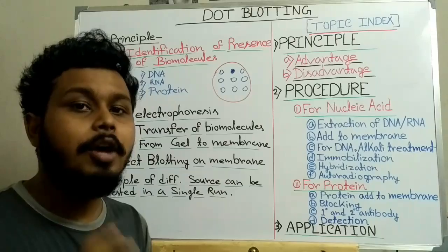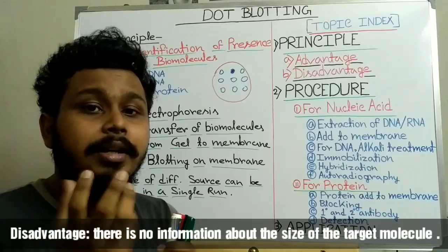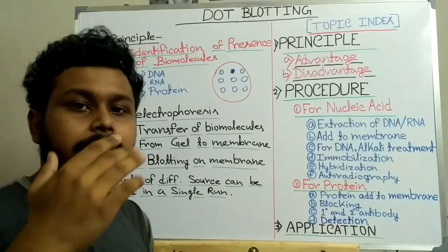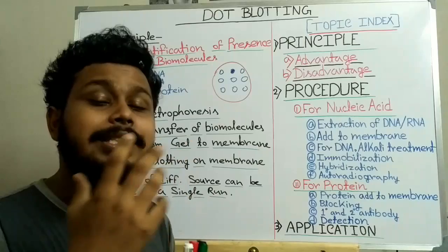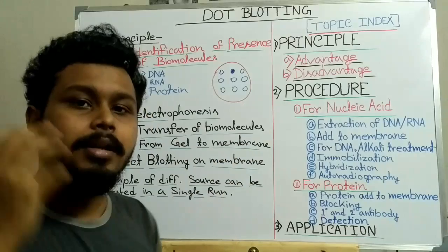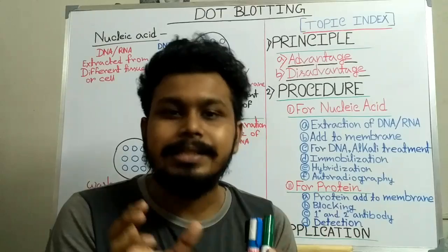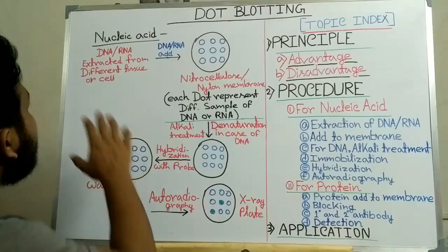The main disadvantage of dot blotting is that we do not get any information about the size or molecular weight of the biomolecules. Since we omit the electrophoresis step, the biomolecules or proteins are not separated by their size or molecular weight, so we do not get any information about the size of the biomolecules. That is the main disadvantage of dot blotting.